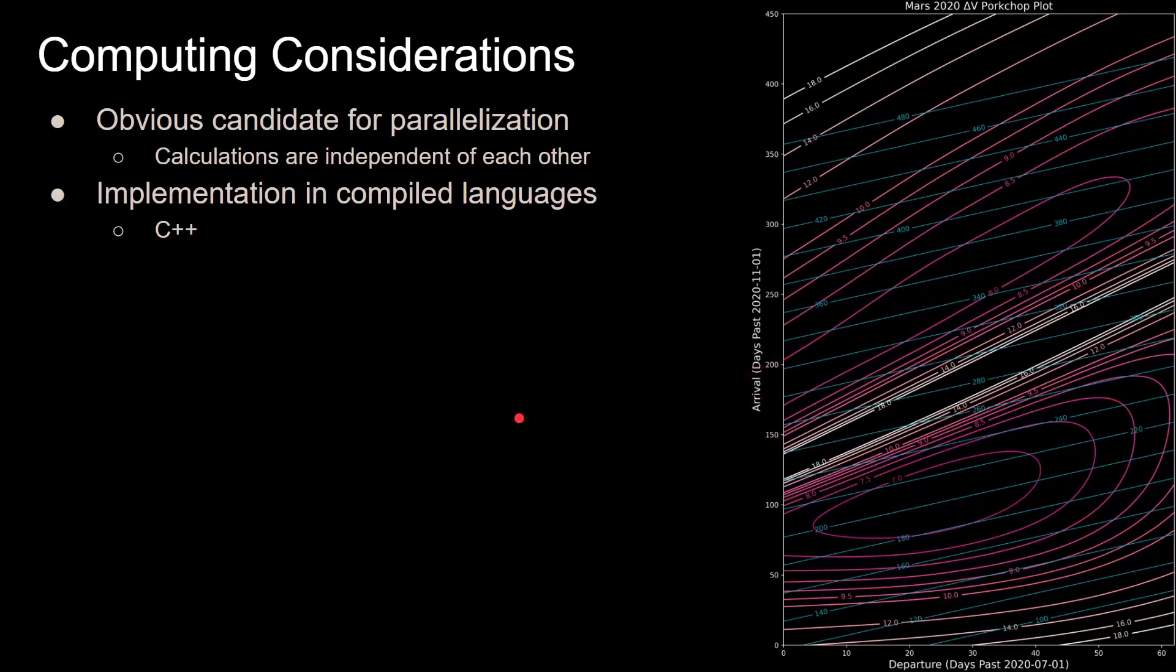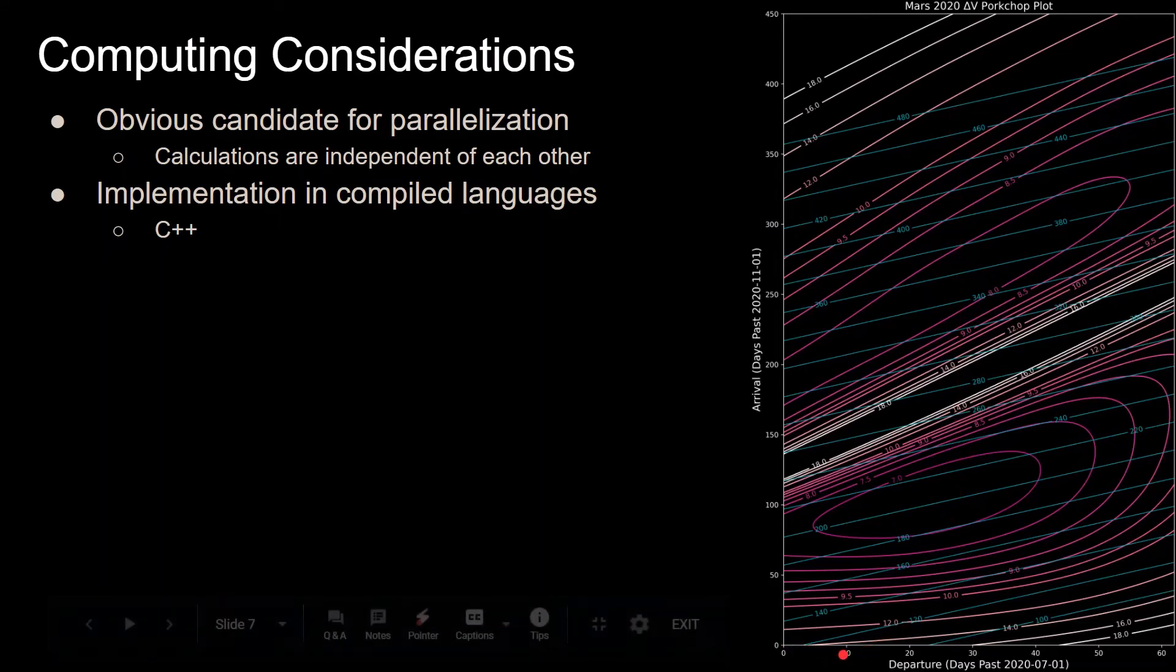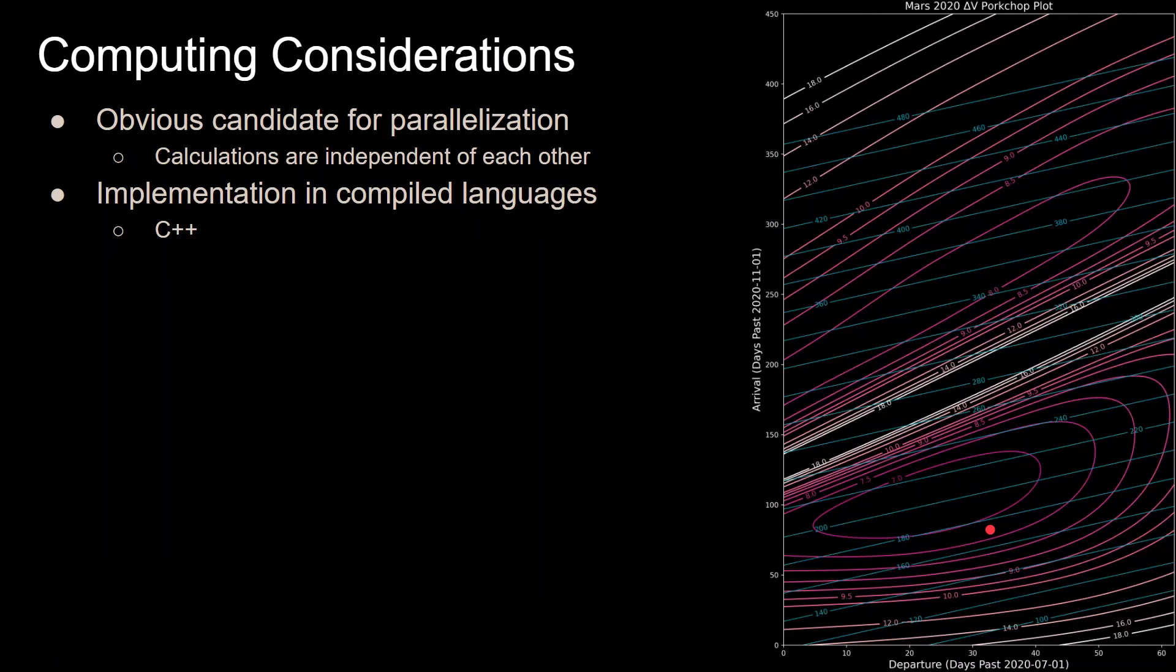For some computing considerations, this is a very obvious candidate for parallelization because these calculations are independent of each other. The solution to one Lambert's problem does not affect the solution to any other Lambert's problem. So these calculations don't have to be done in any particular order, which makes it a good candidate for parallelization. One way to implement it would be to have one of your cores take x equals 0 to 10, the next core takes x equals 10 to 20, and so on. These calculations can all be done in parallel with all the cores of your computer, which will greatly decrease the runtime depending on how many cores you have.